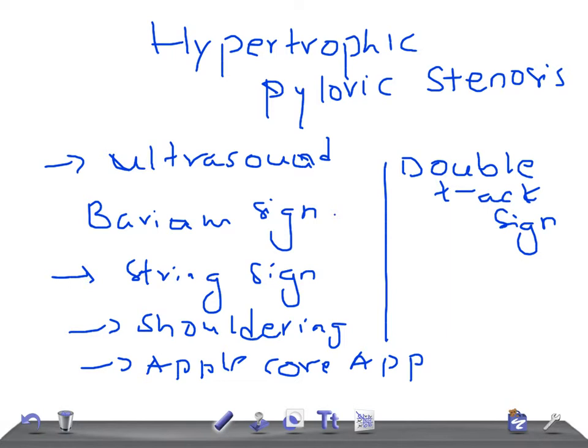And the beak sign. So this is all about the barium signs of hypertrophic pyloric stenosis.